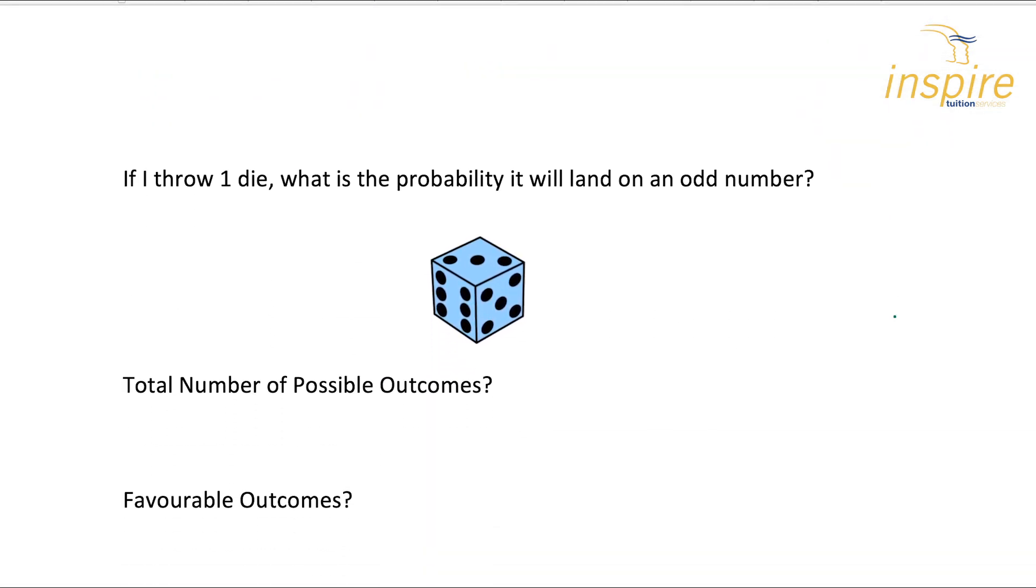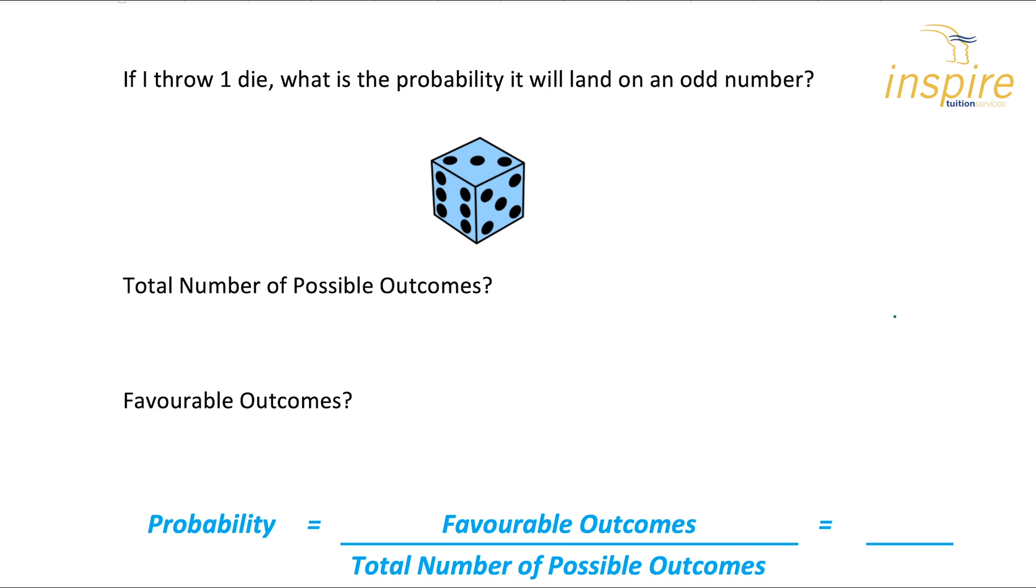All right. So let's have a look at a slightly different example, again just using one die. If I throw one die, what's the probability it will land on an odd number? Now we're interested in odd numbers, so that's our favourable outcome, odd number. So again, total number of possible outcomes here is six because we know that the dice has six faces.